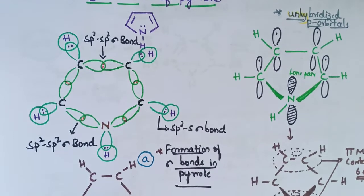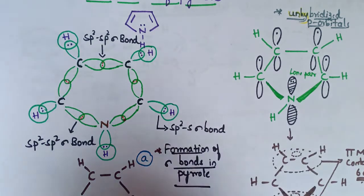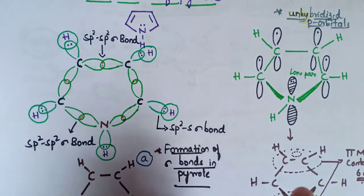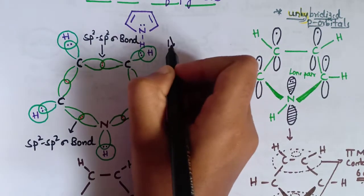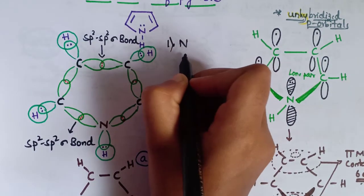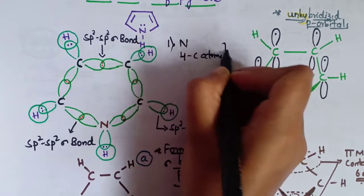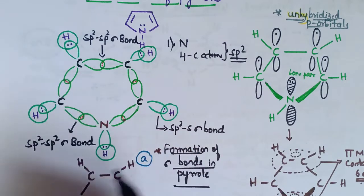Let's study the formation of sigma bonds in pyrrole. In pyrrole, the nitrogen atom and the four carbon atoms are sp2 hybridized. This is the first key point: the nitrogen atom and the four carbon atoms are sp2 hybridized. These sp2 hybrid orbitals overlap with each other.